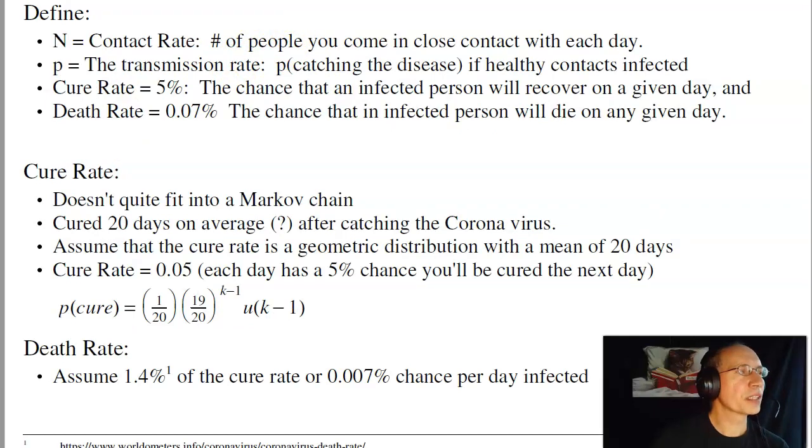I'll come up with a couple definitions. Let N be the contact rate, the number of people you come in close contact with each day. P be the transmission rate, the probability that somebody will catch the disease if a healthy person comes in contact with an infected person.